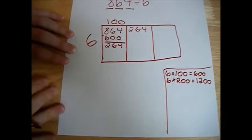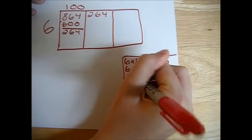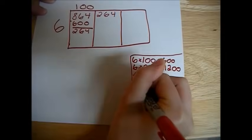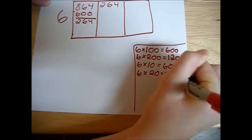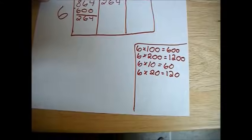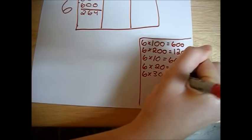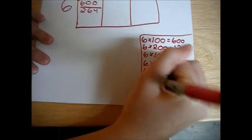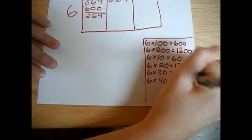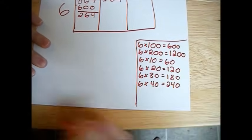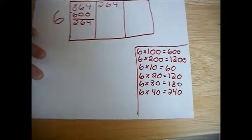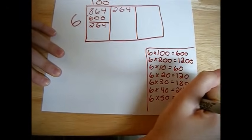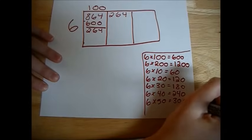Now we're at the tens. We start with 6 times 10, giving us 60. 6 times 20 is 120. 6 times 30 is 180. 6 times 40 is 240. Now we're getting close, but it's always better to be on the safe side, so let's do 6 times 50 just in case. 6 times 5 is 30, so add the extra zero, that gives us 300.